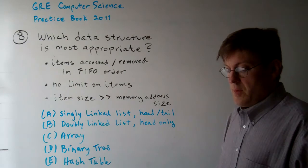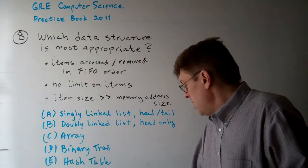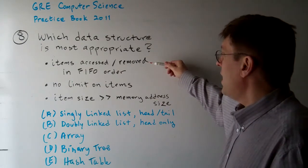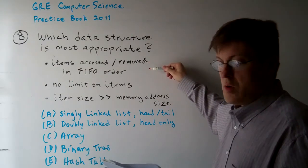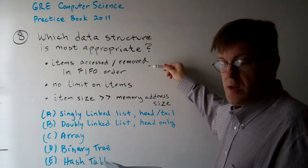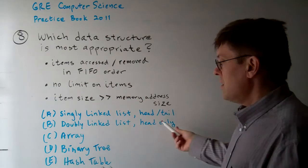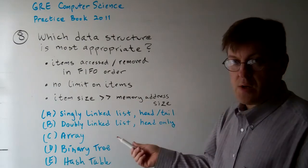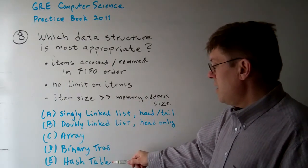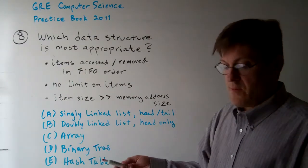We can use a process of elimination here. Let's consider items accessed in first-in, first-out order. If they're always accessed in first-in, first-out order, then a linked list would be a logical solution. The array, the hash table, and even the tree are not necessarily set up for that.